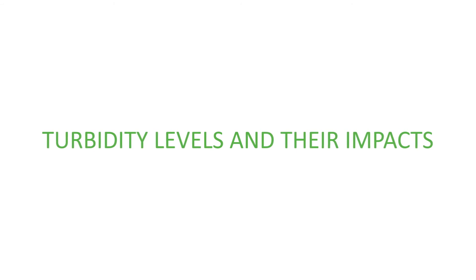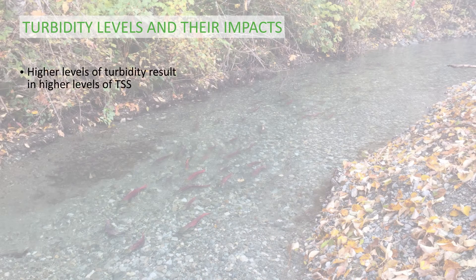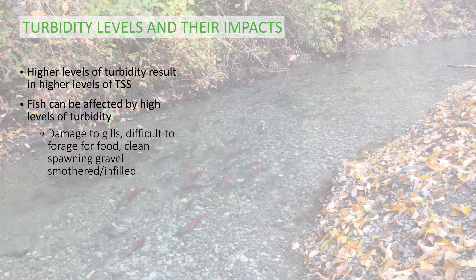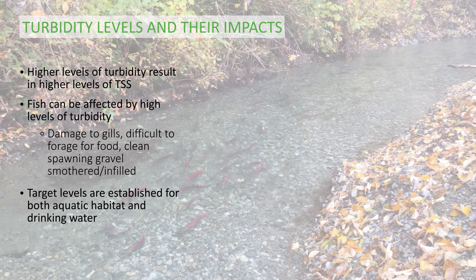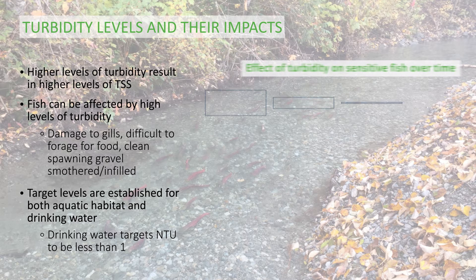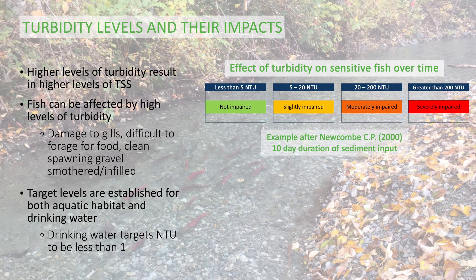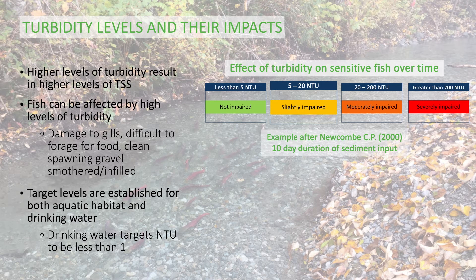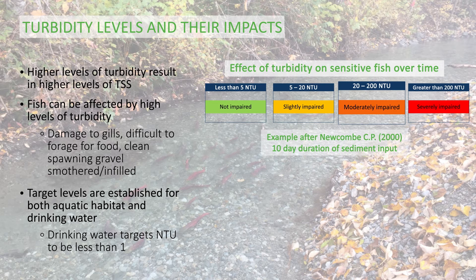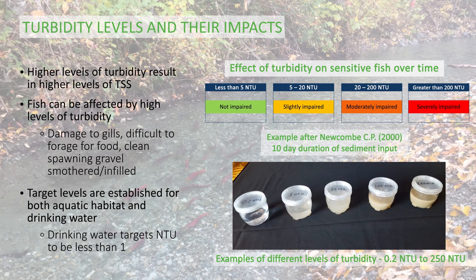Turbidity levels and their impacts. Higher levels of turbidity result in higher levels of total suspended solids. Fish can be affected by high levels of turbidity — it can cause damage to their gills, make it difficult to forage for food, and clean spawning gravel can become smothered and infilled. Target levels are established for both aquatic habitat and drinking water. Drinking water targets NTU to be less than one. The effects of turbidity on sensitive fish over time are: less than 5 NTU is not impaired, 5 to 20 NTU is slightly impaired, 20 to 200 NTU is moderately impaired, and greater than 200 NTU is severely impaired. The bottom picture shows examples of various NTU levels.